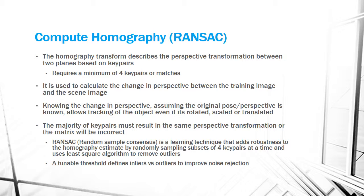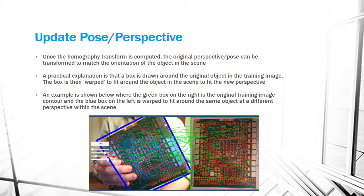After finding the matches, the next step is to compute the homography matrix using RANSAC. The homography transform describes the perspective transformation between two planes based on key pairs, requiring a minimum of four key pairs. It calculates the change in perspective between the training image and the scene image, allowing tracking of the object even if rotated, scaled, or translated. RANSAC, or Random Sample Consensus, adds robustness to the homography estimate by randomly sampling subsets of four key pairs at a time, using a least-squares algorithm to remove outliers, with a tunable threshold defining inliers versus outliers.